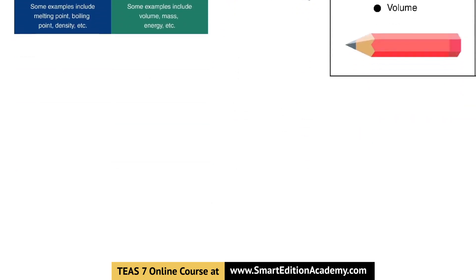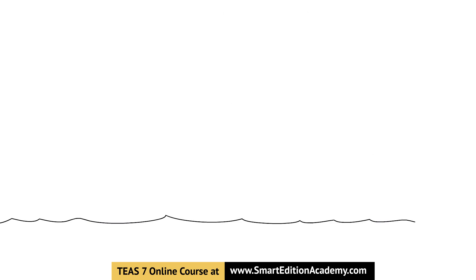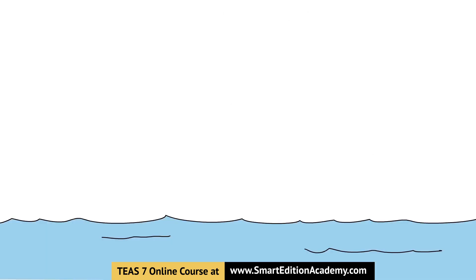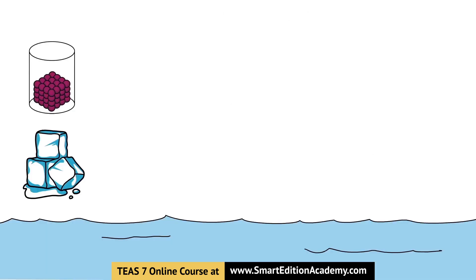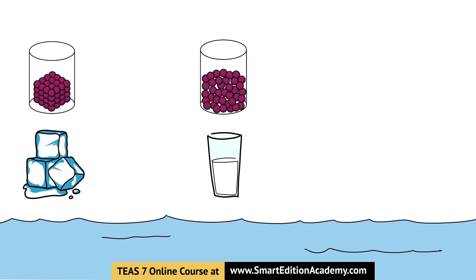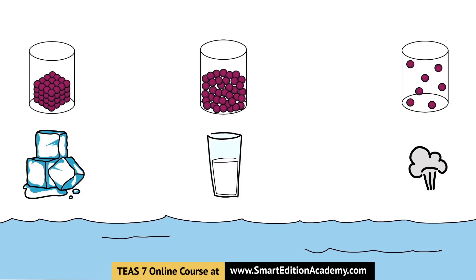Let's return to our unique substance from earlier in the lesson: water. The amount of energy that a substance has is influenced by its state of matter. So water can exist as a solid, liquid, or gas, and therefore have varying levels of energy. Water also has very unique traits. Cohesion is the tendency of particles of the same kind to stick to each other, and with water, this is due to polarity.